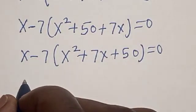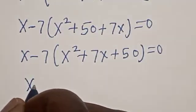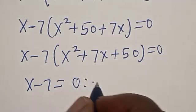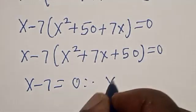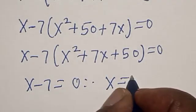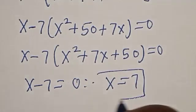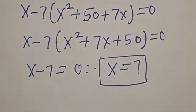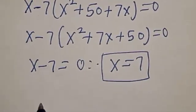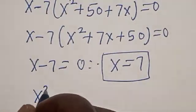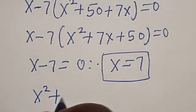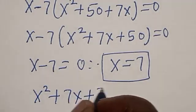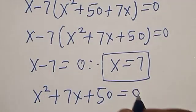We now have two cases. First: s minus 7 equals 0, therefore s equals 7. That is the first value of s. Now let's look for the other values from s squared plus 7s plus 50 equals 0.